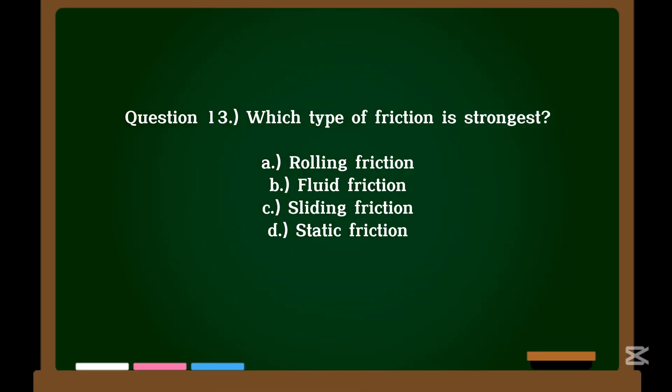Question 13. Which type of friction is strongest? A. Rolling friction. B. Fluid friction. C. Sliding friction. D. Static friction. Correct answer: D. Static friction.